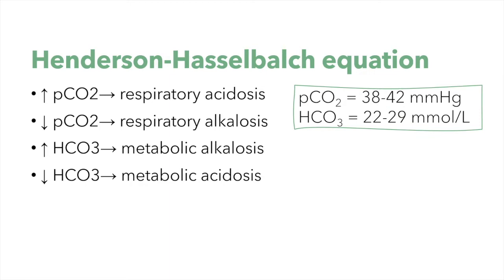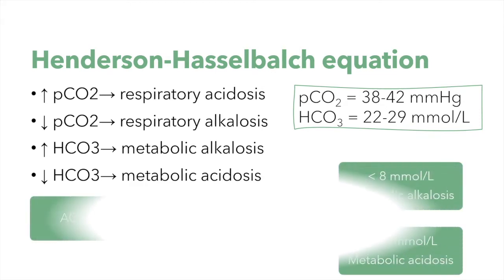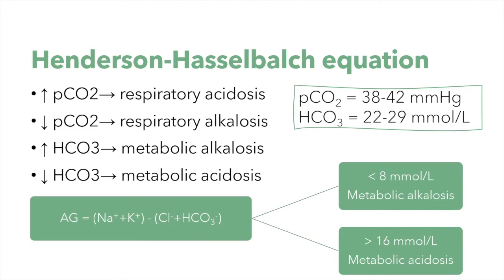So if we find acidemia, we have to look at whether pCO2 is increased or bicarbonate is decreased to find the primary cause. The one that is altered in the opposite direction of the pH is probably a compensation. If both of them are altered in the same direction as the pH, then it's a mixed disorder.